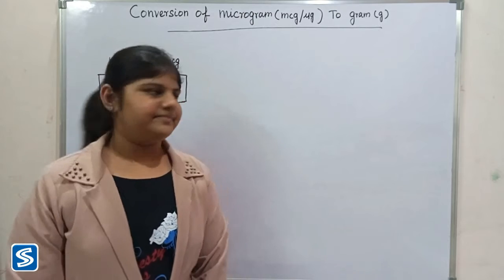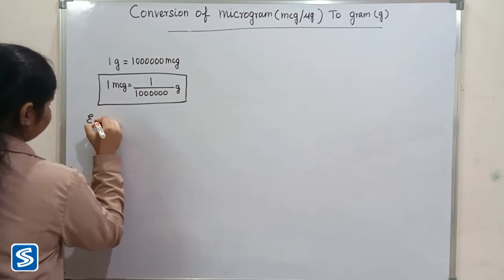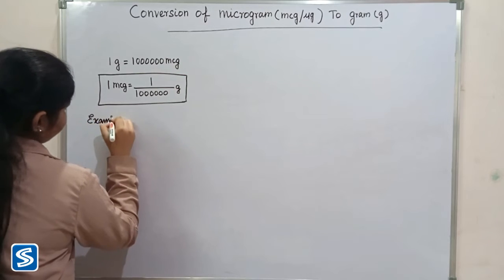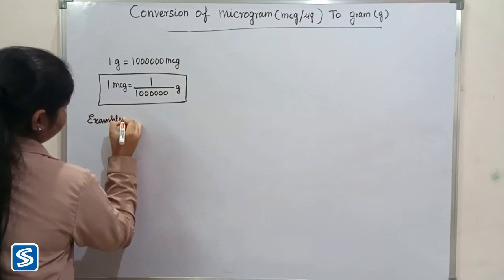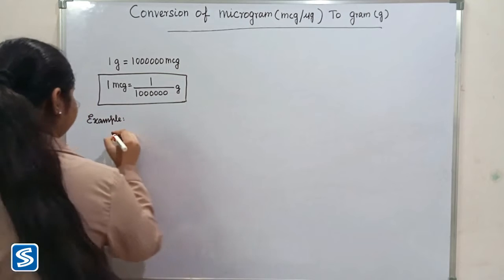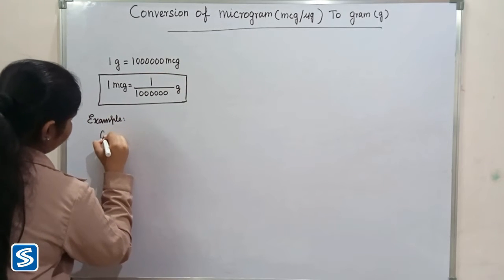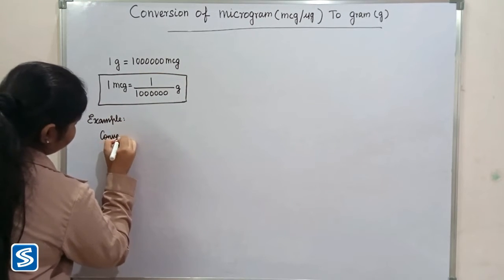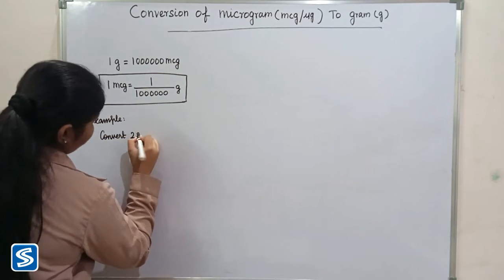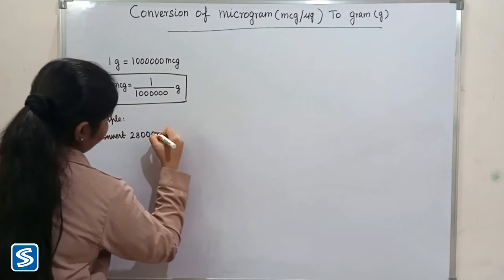Now we will take some examples. For example, convert 28 million micrograms into gram.